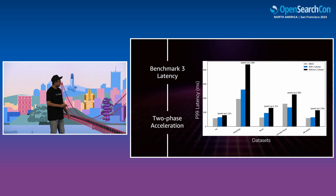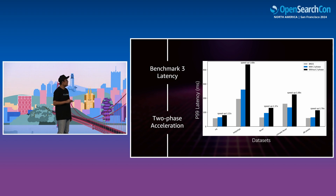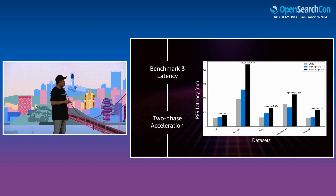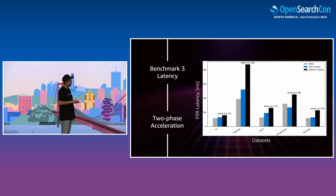Benchmark 3 compares speed with BM25 and dense retrieval. Dense retrieval goes to almost one second without concurrent search. For concurrent KNN search, latency can be around 20 milliseconds. On five BEIR datasets, without our two-phase acceleration algorithm, we are about 2 to 5 times slower than BM25. But when we apply two-phase acceleration, we are almost aligned with BM25, and on some datasets we are even faster. So even in speed, we can align with BM25.